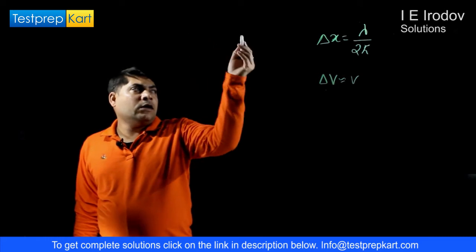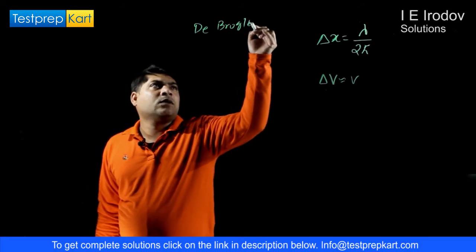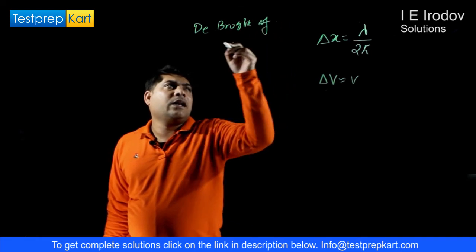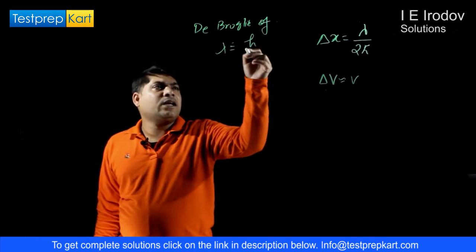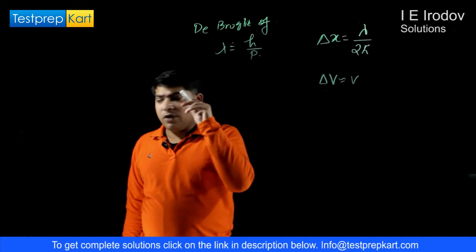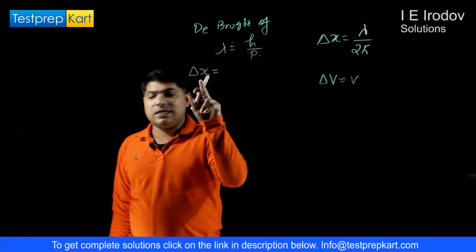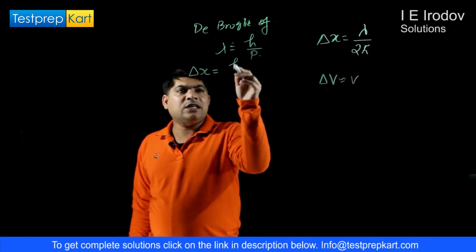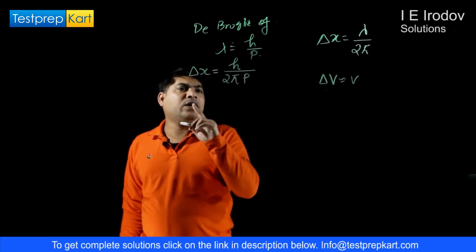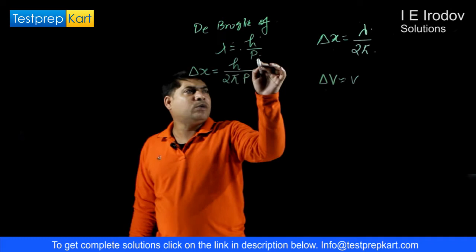We know that the de Broglie wavelength of a particle lambda can be written as h over p. So from here we can write the uncertainty of position delta x of a particle, that is h over 2 pi p, because delta x is lambda over 2 pi and lambda equals h over p.